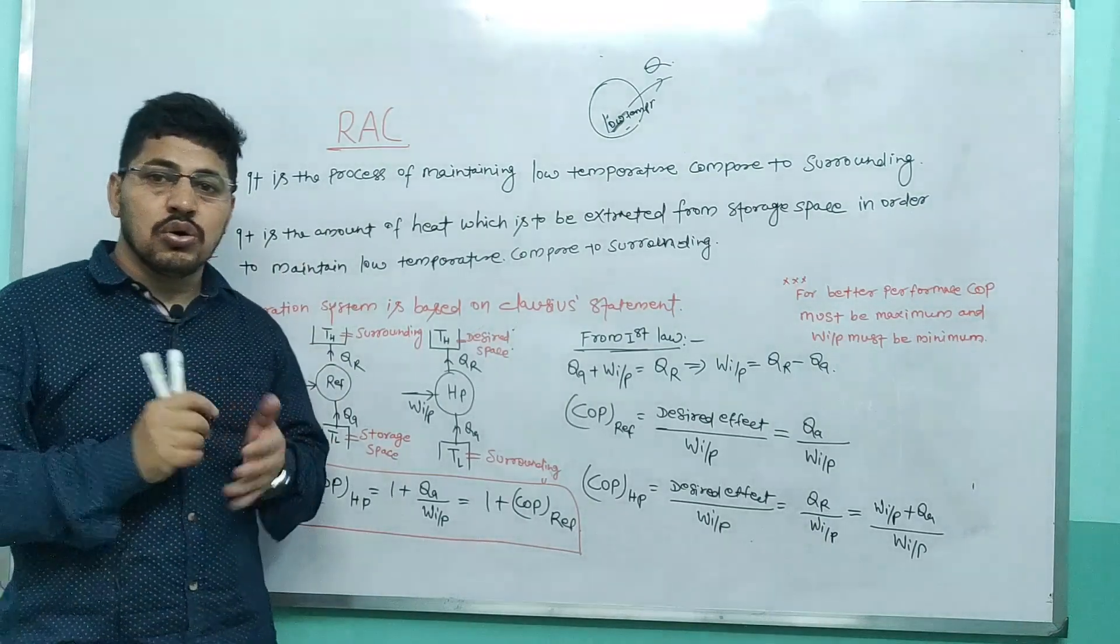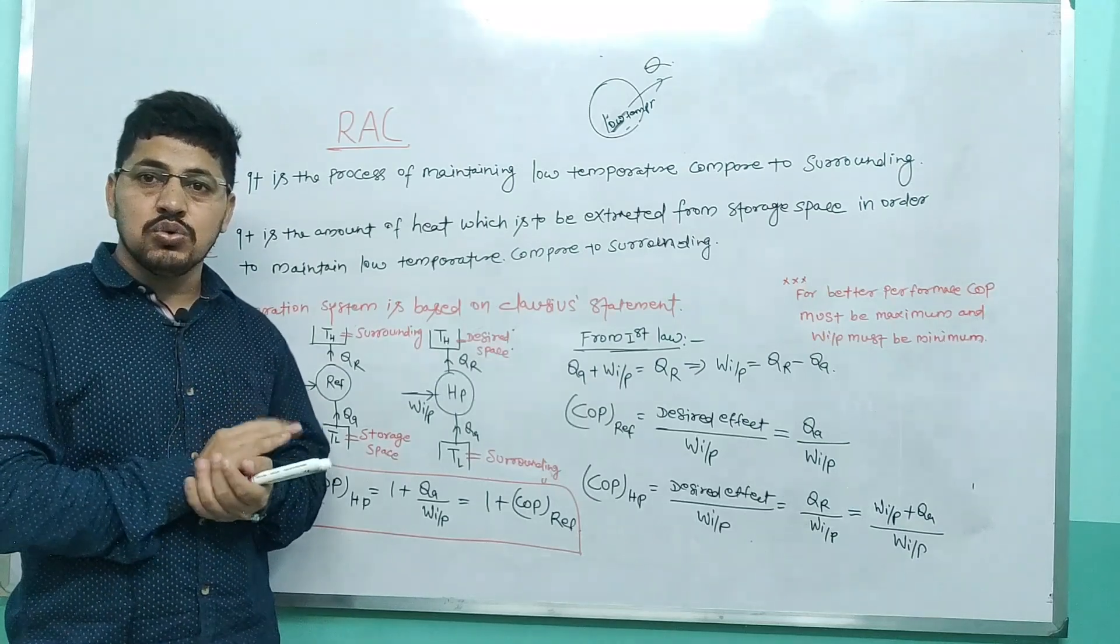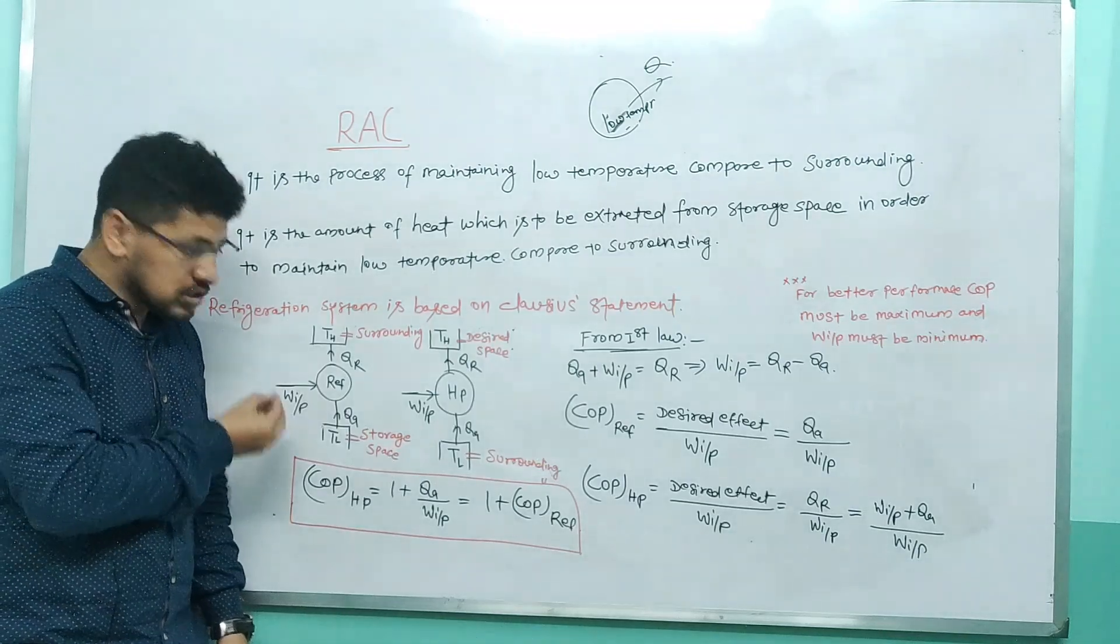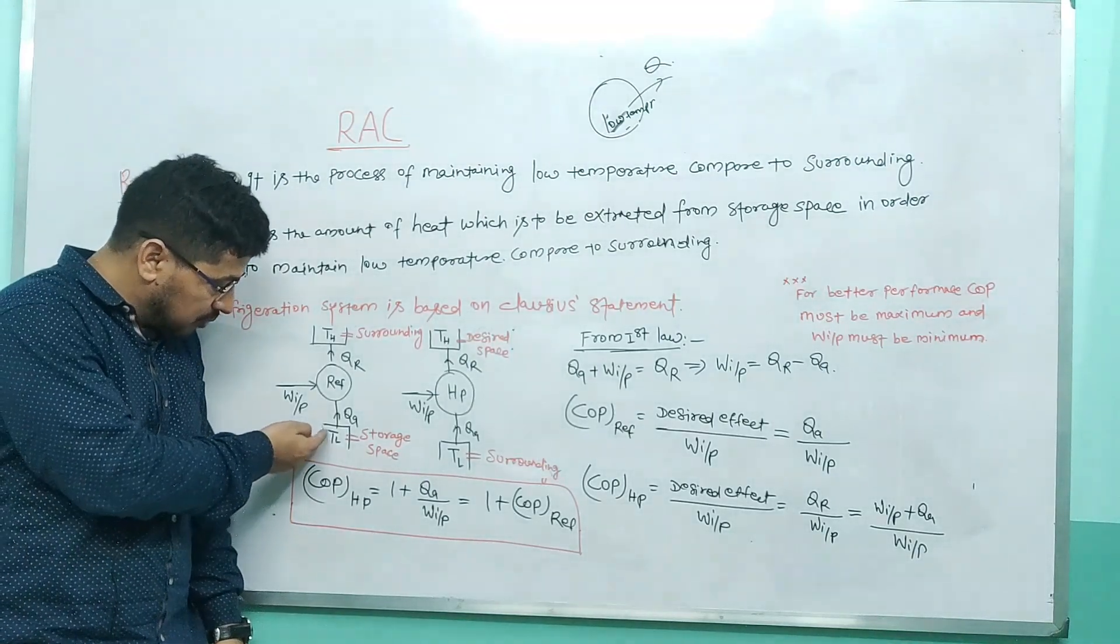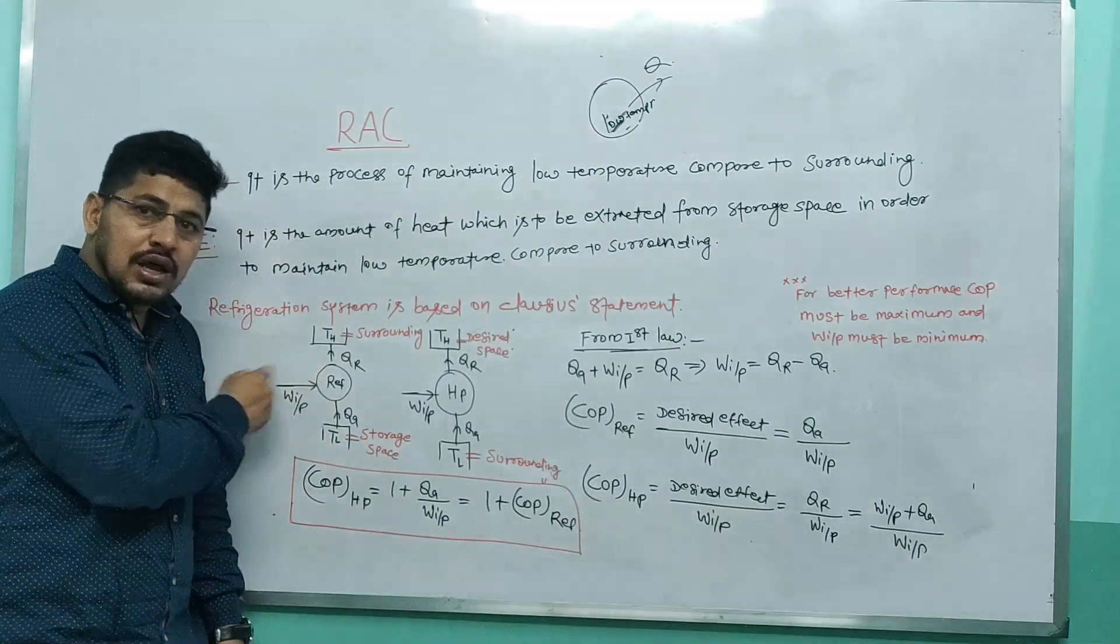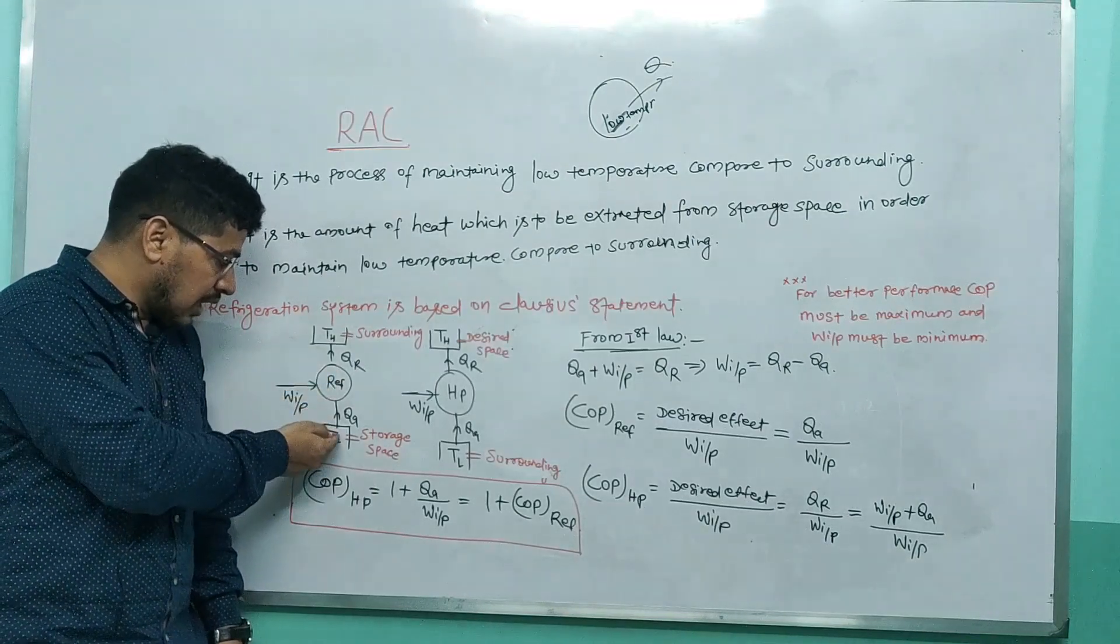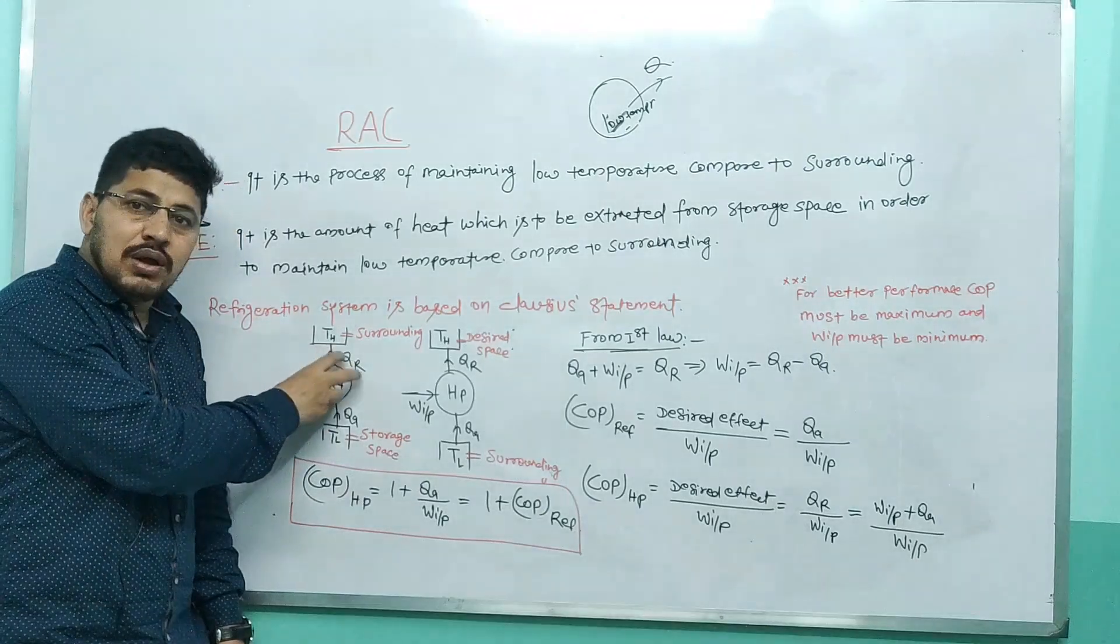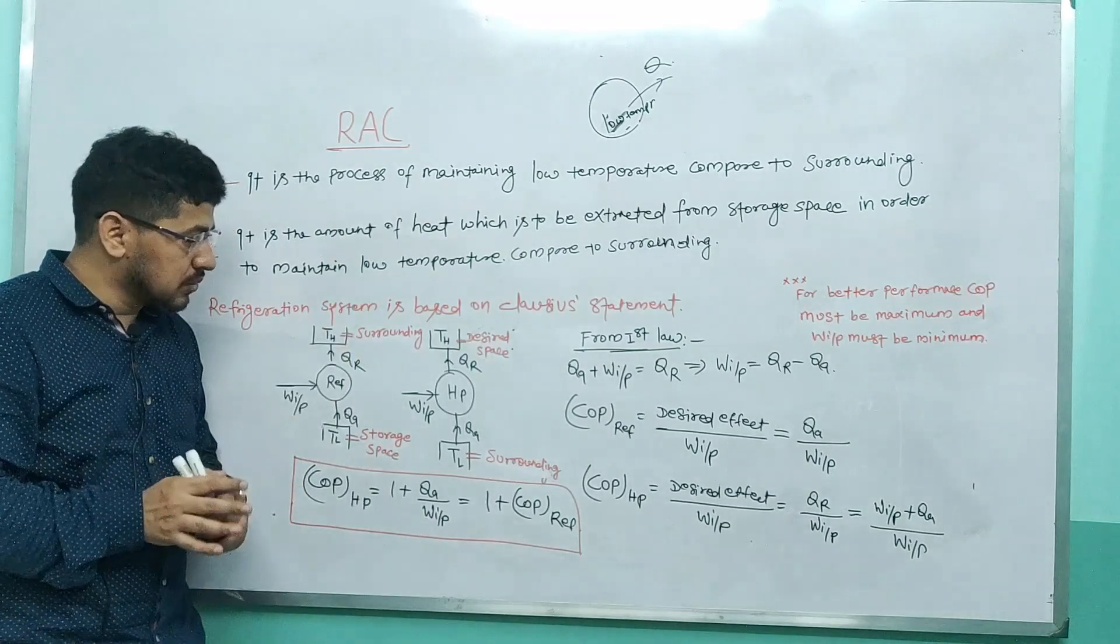Refrigeration system is based on Clausius statement. It is impossible to construct a cyclic device which will transfer heat from low temperature to high temperature without any external work. So refrigeration system is based on Clausius statement.